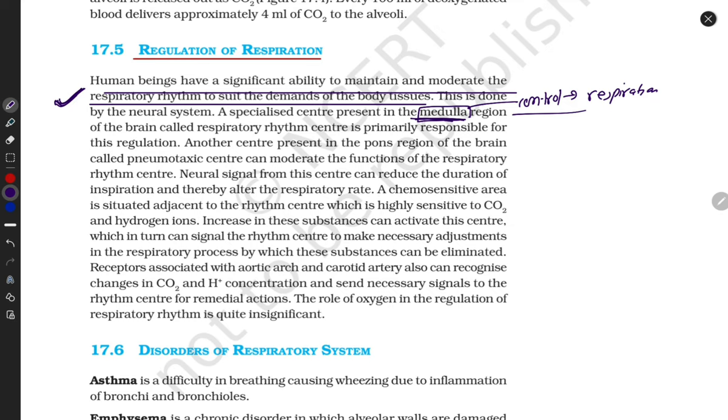Medulla controls respiration. Some pneumotoxic center also controls our respiratory rhythm. Some neural signals from the center can reduce the duration of inspiration and alter the respiration rate. When this center is activated, our respiration rate decreases. We take normal respiration. If our pneumotoxic center is not activated, then we take speedy respiration.